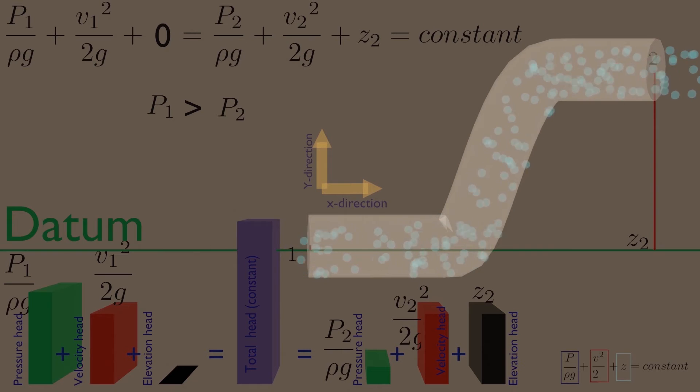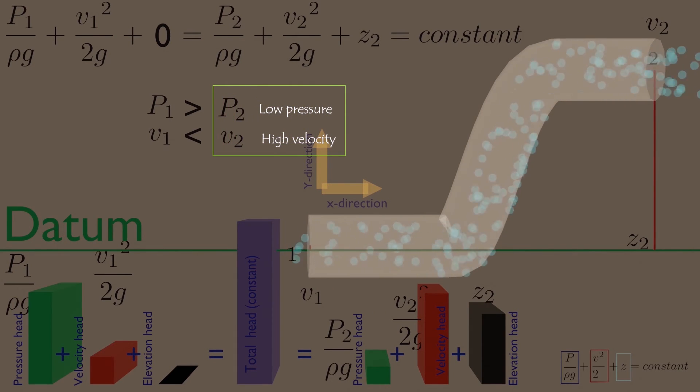And finally, P2 is lower, so velocity V2 must be higher, because of low pressure and high velocity relationship, so velocity V2 is greater than V1.